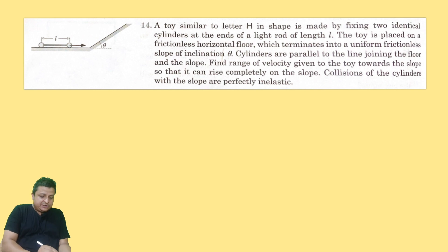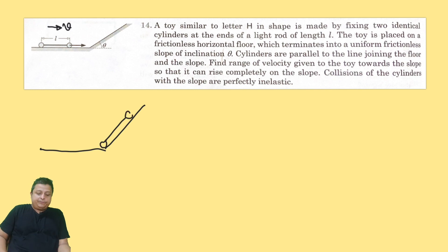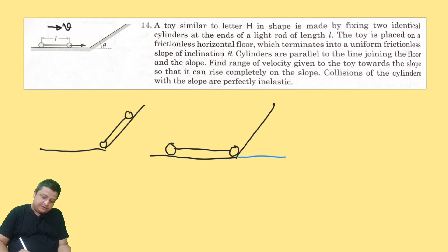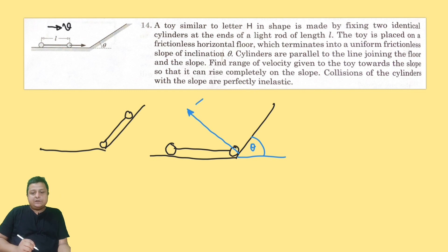We consider a velocity v given to the toy towards the slope so that it can ride completely onto the slope and just come to rest there. When ball B collides with the slope, there is an impulse J given by the normal reaction of the slope.